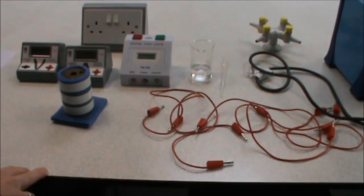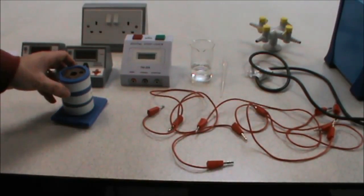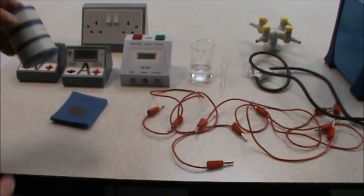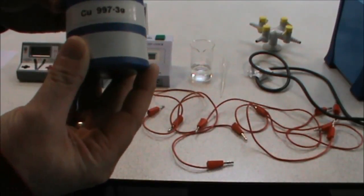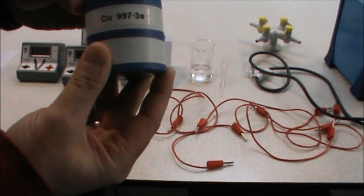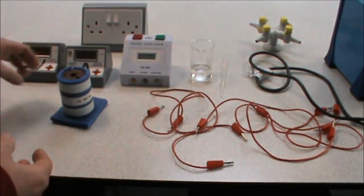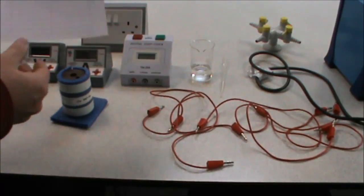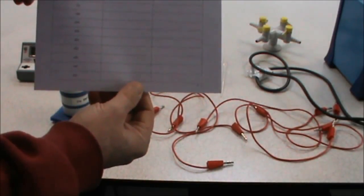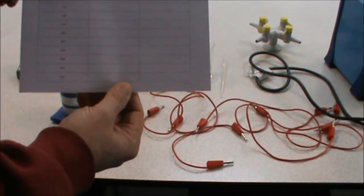Step one of the instructions tells us to measure and record the mass of the copper block. This has already been done for us and the mass has been recorded on the front of the copper block. You need to make a note on your results table of the mass of the copper block.